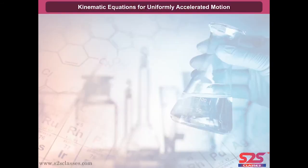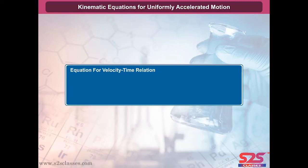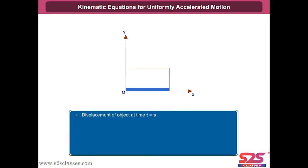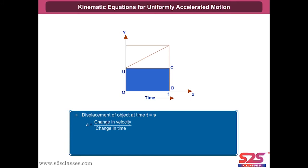Kinematic equations for uniformly accelerated motion — equation for velocity-time relation: consider an object moving with uniform acceleration A. Let U be its initial velocity at time T equal to zero, V its velocity after time T, and S its displacement during this time interval. Therefore, acceleration equals change in velocity upon change in time, which equals V minus U upon T. So V minus U equals AT, therefore V equals U plus AT.